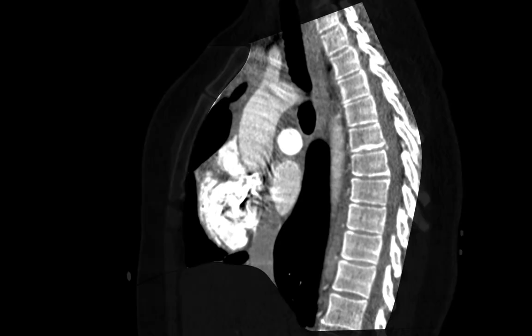The mediastinum extends from the thoracic inlet to the diaphragm, and it's often subdivided into three compartments: the anterior mediastinum, the middle mediastinum, and the posterior mediastinum. As chest radiologists, we typically use the anterior surface of the great vessels and heart as the boundary between the anterior and middle mediastinum, and the anterior surface of the thoracic spine as the boundary between the middle and posterior mediastinum.